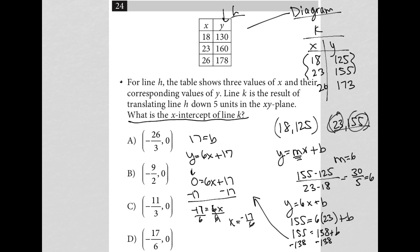The actual ordered pair, therefore, will be negative 17 over 6 comma 0, because again, in order to find the X intercept, you find the X value where Y is equal to 0. So there's my ordered pair, and therefore, choice D must be the correct answer.